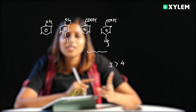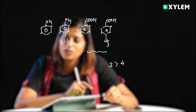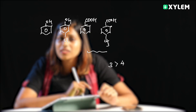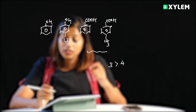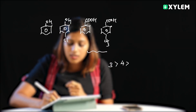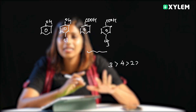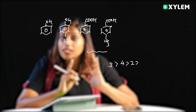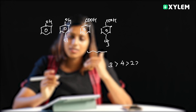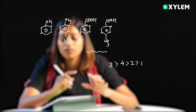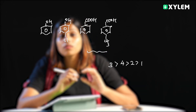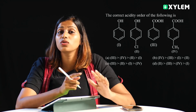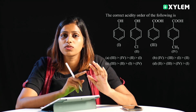Compound 2 is a para phenolic system with chlorine. Chlorine is an electron withdrawing group. Therefore, 2 will have the next highest acidity. So the order will be 3 > 4 > 2 > 1, and hence you get the correct option A.